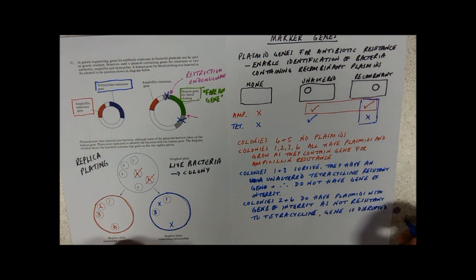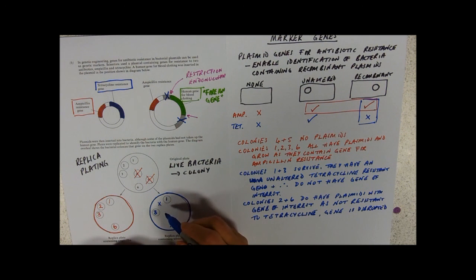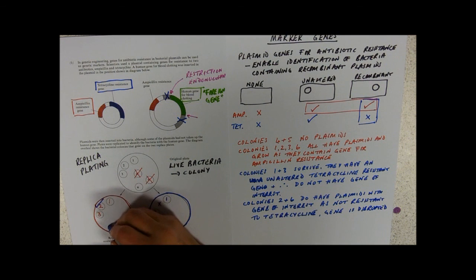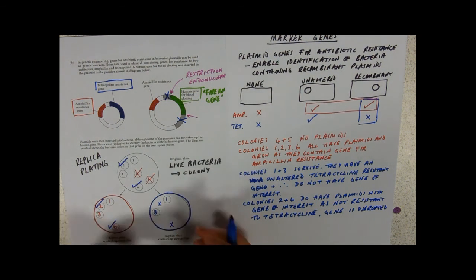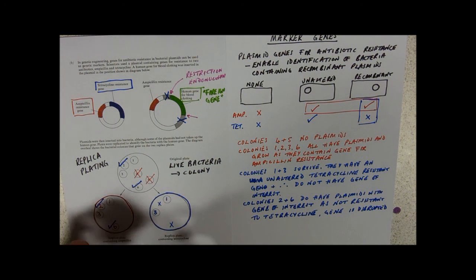So now we know which ones they are. And I know you're thinking, oh wow, but they're dead. Well they're dead on that plate. But they're not dead on that plate. And they're not dead on that plate either. So we've still got some colonies that we can lift off and then grow. So I'm hoping that that kind of sorts out the issue of marker genes for you.